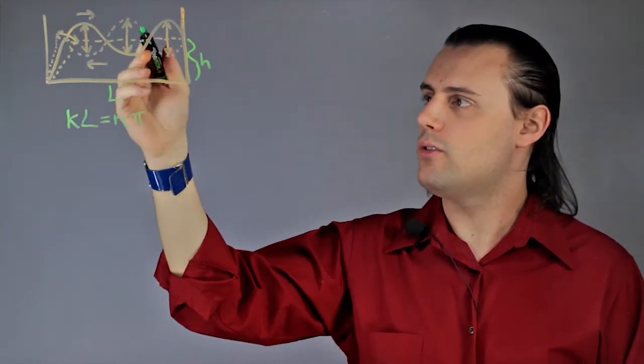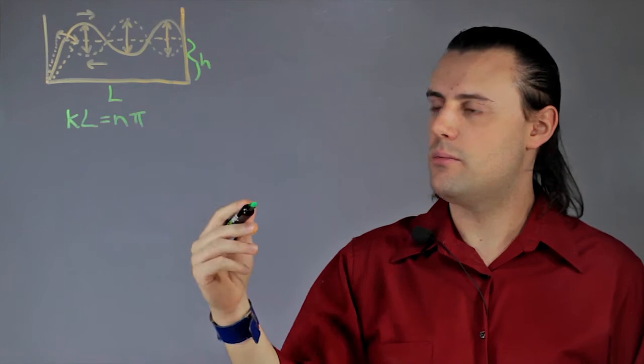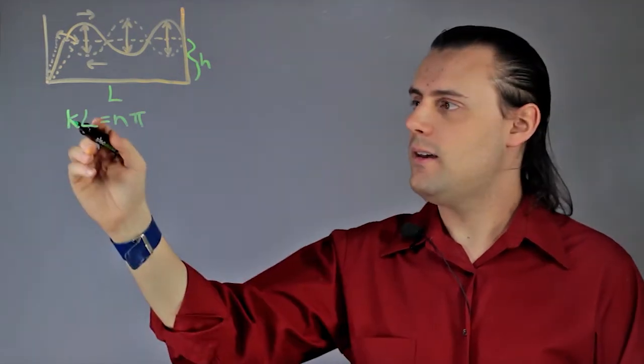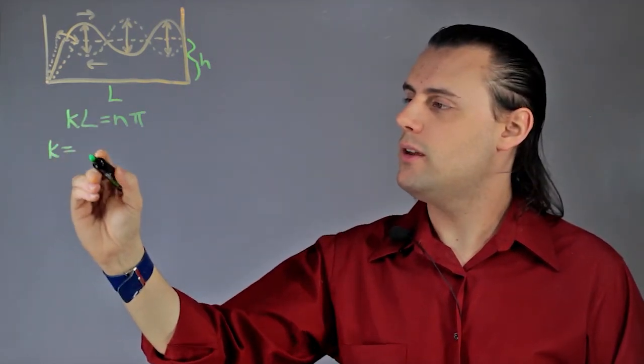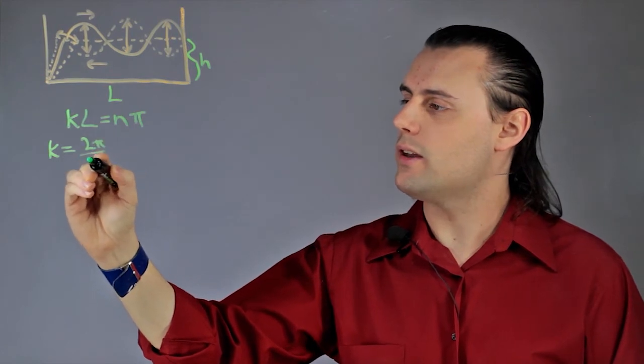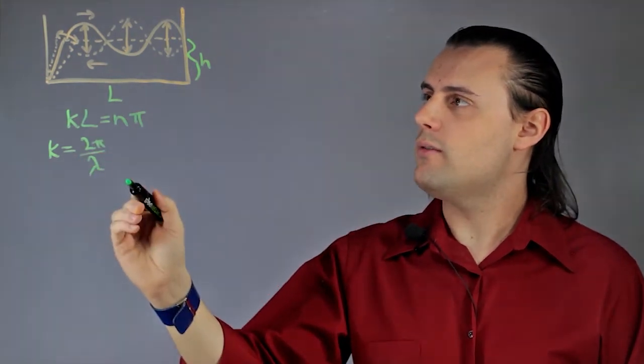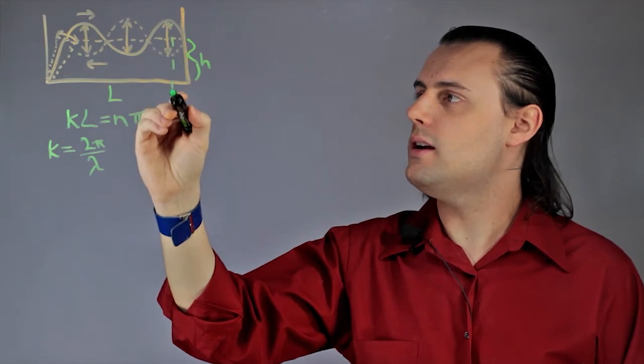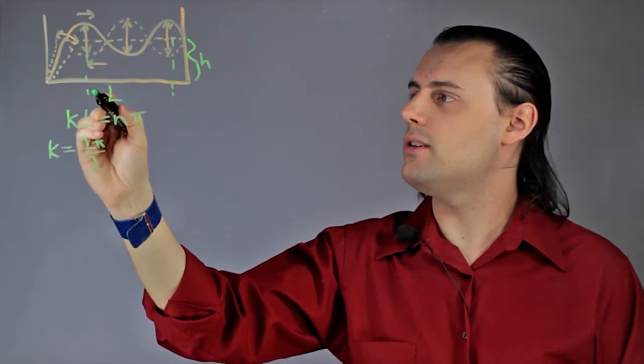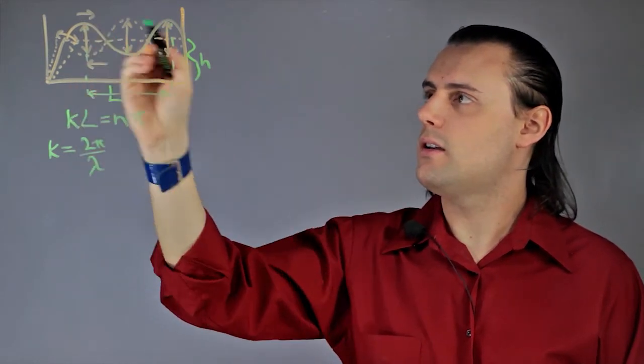But what does this actually mean? K is the wave number, which is equal to 2π over the wavelength. The wavelength in this case would be the spatial distance between two peaks.